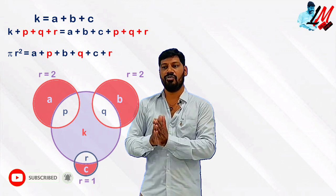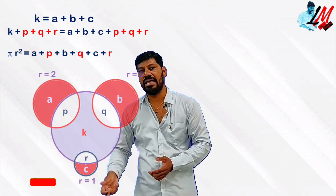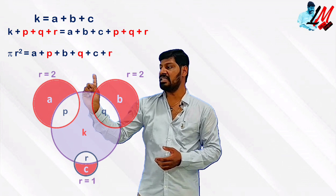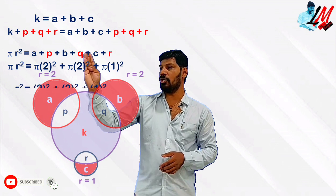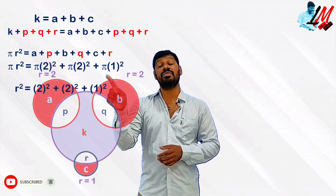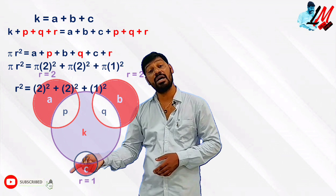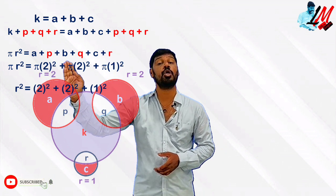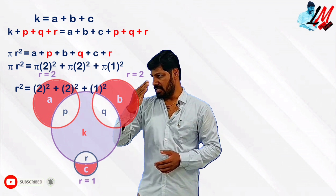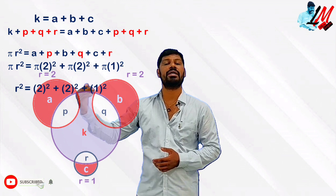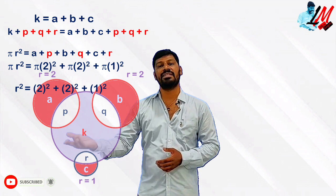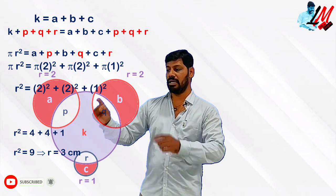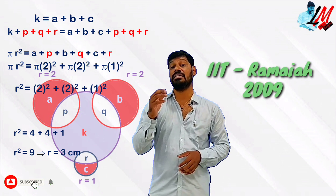K plus P plus Q plus R is nothing but the area of the big circle with unknown radius R, so that equals pi R square. A plus P is the area of the circle with radius 2, which is pi times 2 square. B plus Q is also pi times 2 square. C plus R is the area of the small circle, which is pi times 1 square. So pi R square equals pi 2 square plus pi 2 square plus pi 1 square. Cancelling pi on both sides, R square equals 4 plus 4 plus 1 equals 9, so R equals 3. The radius of the bigger circle is 3 centimeters. This problem is from the IIT Ramayya entrance exam in the year 2009.